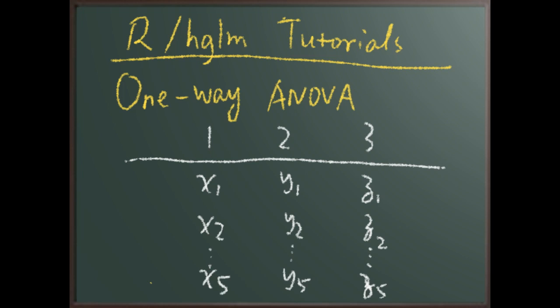If you look at the variance in this data, part of it can be explained by the difference between different observations or different people. Of course, the hglm package can also deal with unbalanced designs, but we use this balanced case as a very intuitive and simple example to start with.